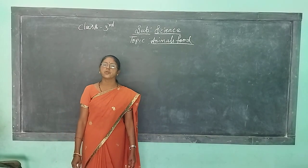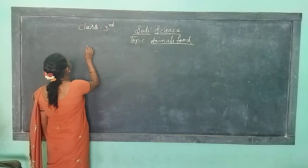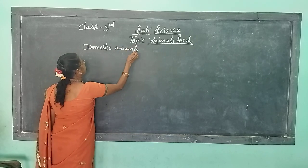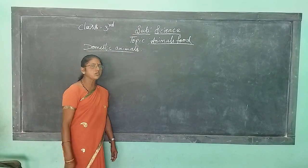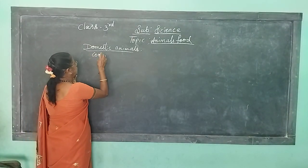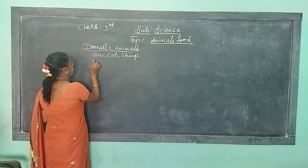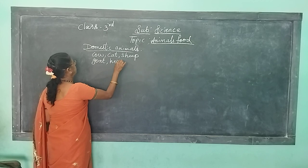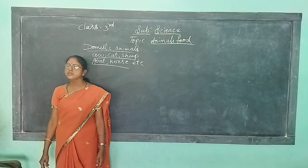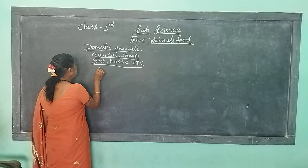So what can animals eat? I am going to explain. First, domestic animals. Can you name some domestic animals? Cow, cat, sheep, goat, horse. What do all these animals eat? They eat grass, leaves, and plants.